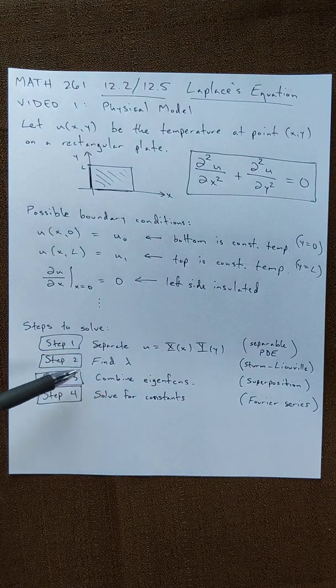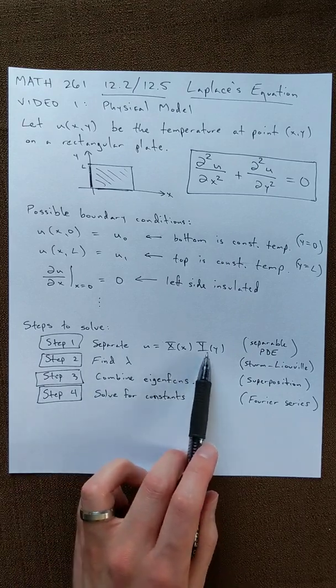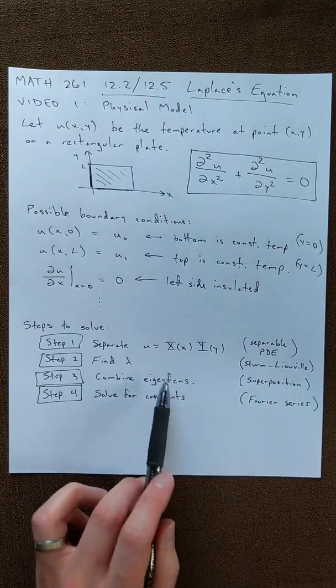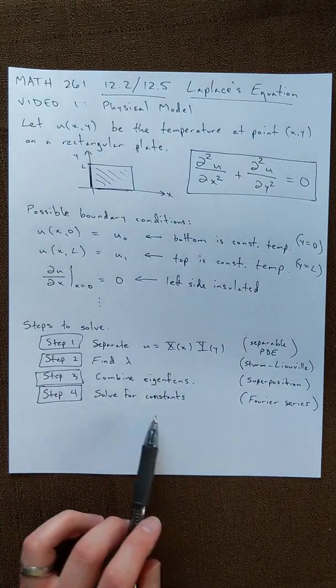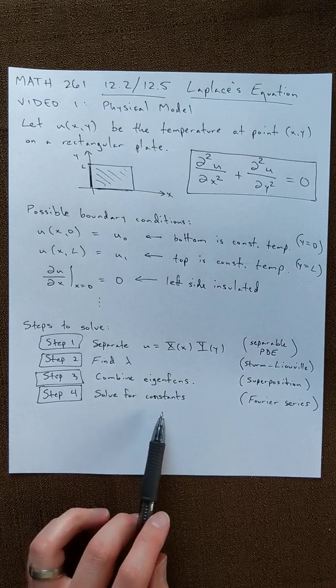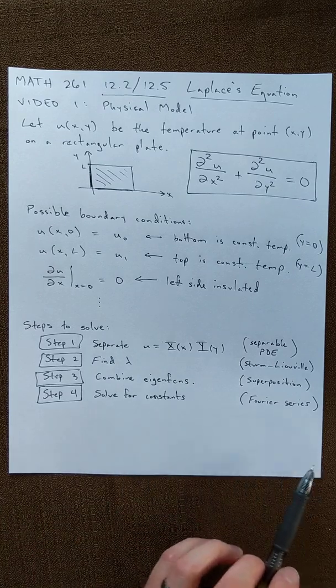When we're done with that, we're going to try and combine our eigenfunctions, which just means multiplying x times y and then adding them all up, taking an infinite sum. When we're done with that, we'll have a bunch of constants, c1s and c2s and all that. We'll have to solve for the constants. Typically that ends up being a Fourier series.